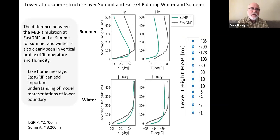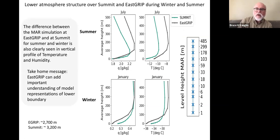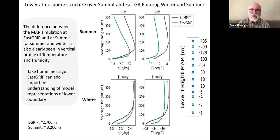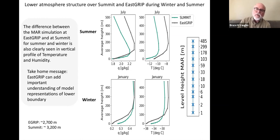All of the data we're producing will be used by our team of modeling people. Here's the MAR model simulation outputs for EastGRIP in June 2019 — the upper plot is temperature, the lower plot is specific humidity, with an incursion of colder, drier air visible in the upper plot. We see the lower atmospheric structure over Summit and EastGRIP from the model, showing quite a difference between summer and winter in water vapor and temperature, and the boundary layer altitude does change. The EastGRIP measurements can add important understanding of model representations in the lower boundary — we can go up about 500 meters.